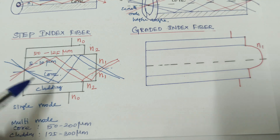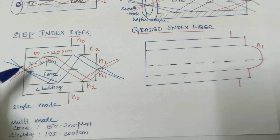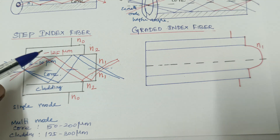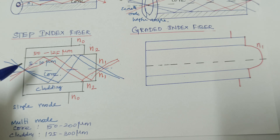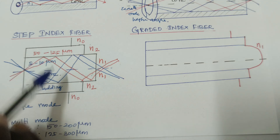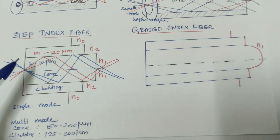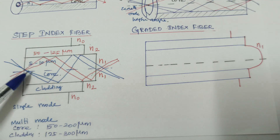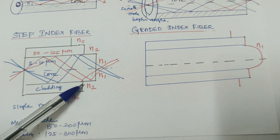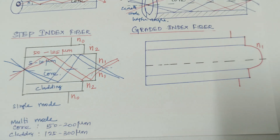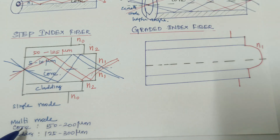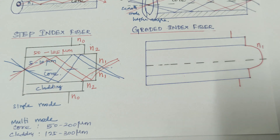So the diameter varies between step index multi-mode and step index single mode fiber, but the structure is very similar. Only one mode propagates through single mode step index fiber, while more than one mode propagates through step index multi-mode fiber. The core and cladding diameters differ between the two.